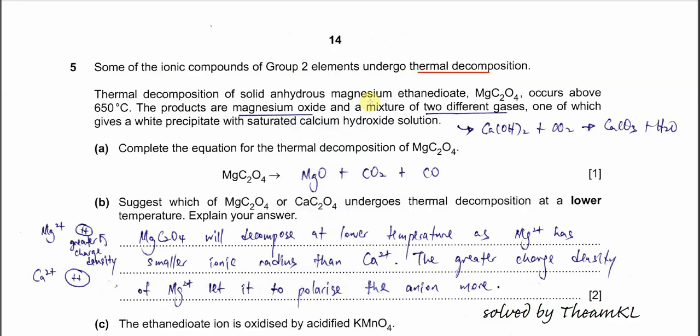of this magnesium ethanedioate and this decomposition occurs at 650 degrees C. The products are magnesium oxide and a mixture of two different gases. One of them will form a white precipitate when it reacts with saturated calcium hydroxide.